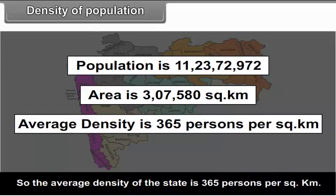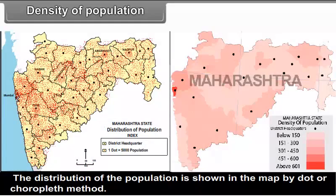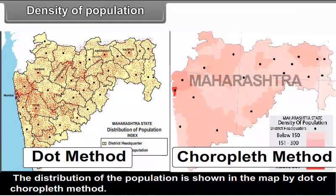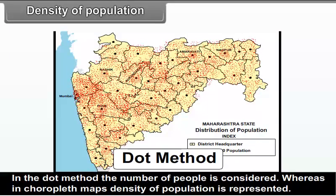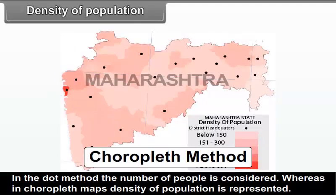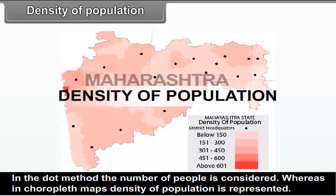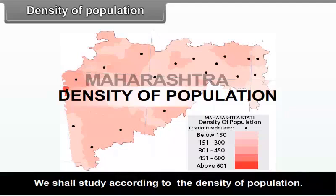The average density of the state is 365 persons per square kilometer. The distribution of population is shown on a map by the dot method or the choropleth method. In the dot method, the number of people is considered, whereas in the choropleth method, density of population is represented. We shall study population according to density.